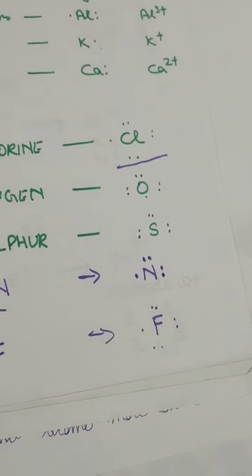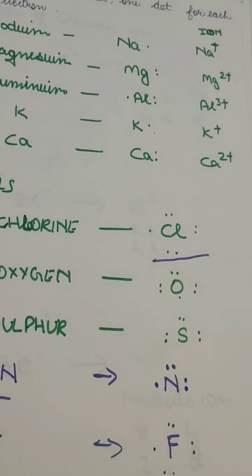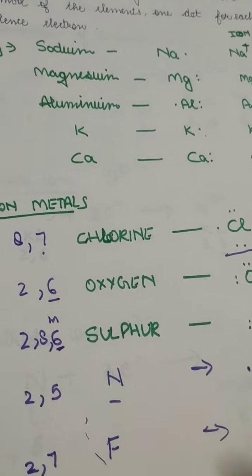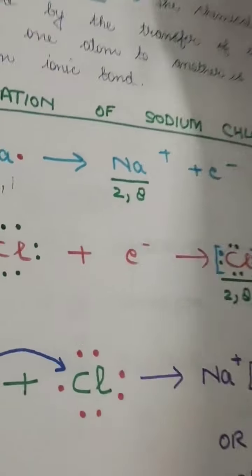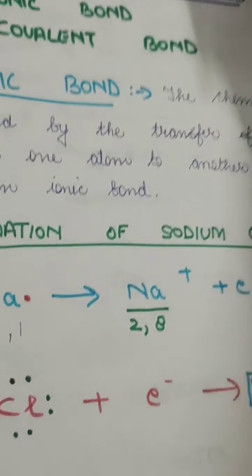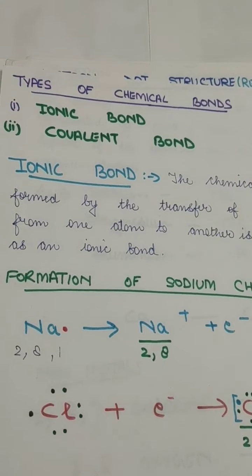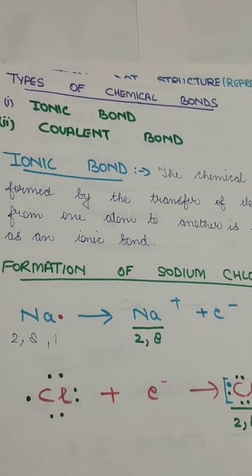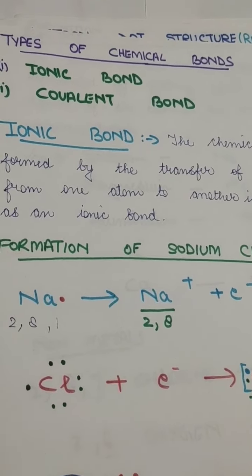This is the electron dot structure of metals and non-metals. Now we move to our main topic, that is chemical bonds. There are 2 types of chemical bonds: one is ionic bond and the other one is covalent bond.